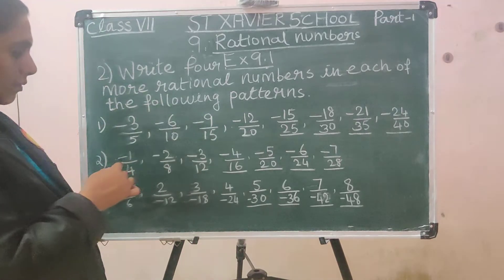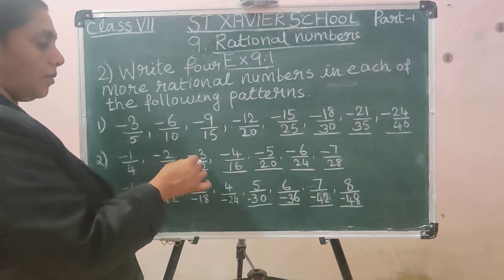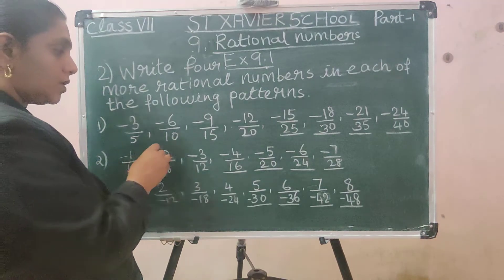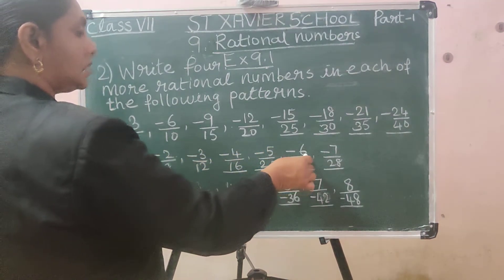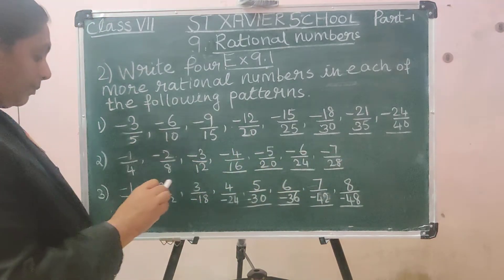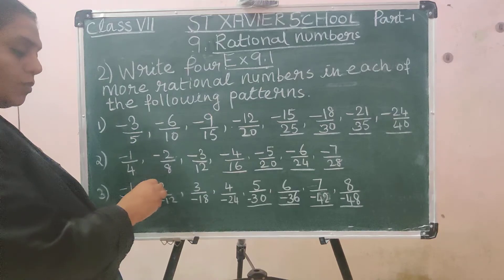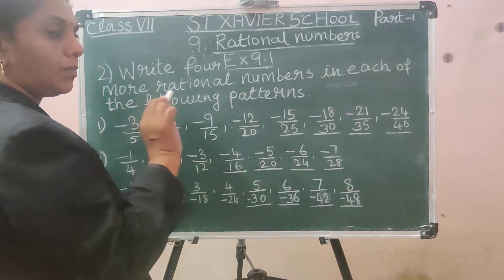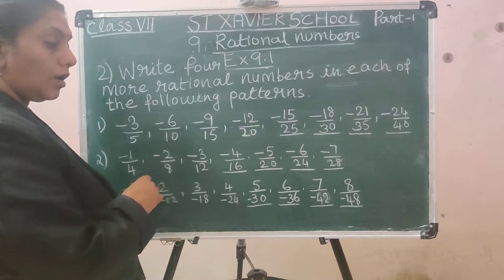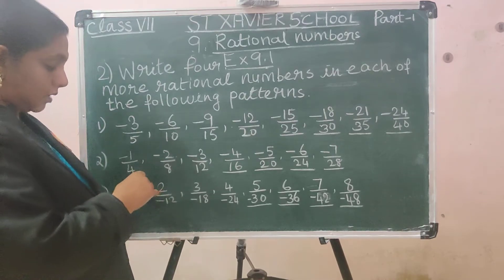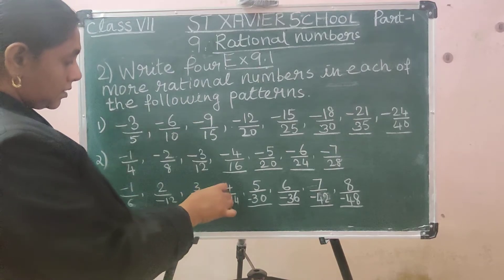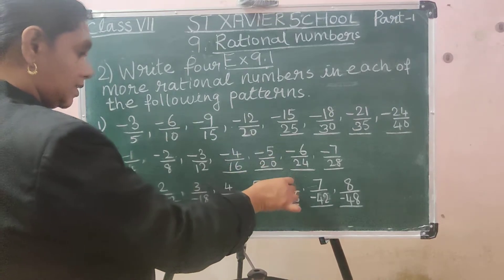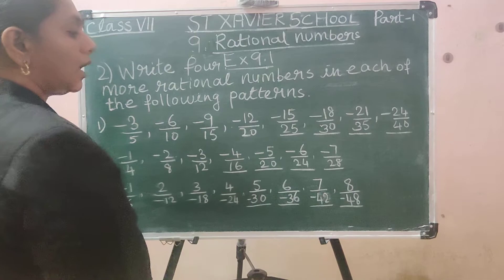Second pattern: minus 1 by 4, minus 2 by 8, minus 3 by 12 — numerators are the 1-times table and denominators are the 4-times table. Next four: minus 4 by 16, minus 5 by 20, minus 6 by 24, minus 7 by 28. Third pattern: minus 1 by 6, 2 by minus 12 — the minus is in the denominator. Next four are: 5 by minus 30, 6 by minus 36, 7 by minus 42, and 8 by minus 48.